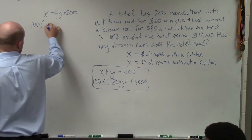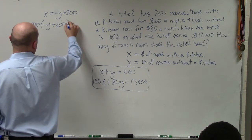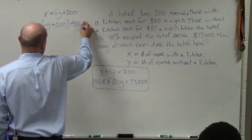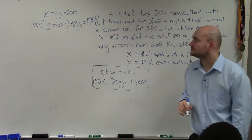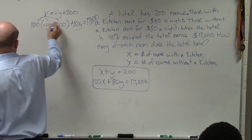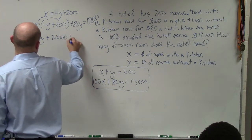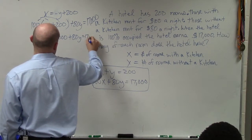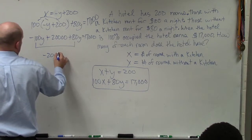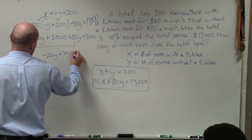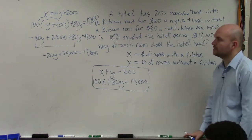And then we take that and we plug it into our other equation. So I have 100 times negative y plus 200 plus 80y equals 17,000. Apply distributive property. Combine like terms. Does everybody see what I've done so far?